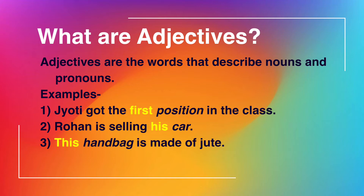Here are a few examples. First: Jyoti got the first position in the class. Second: Rohan is selling his car. Third: This handbag is made of jute. The highlighted words are describing something about the italic words — position, car, and handbag respectively.